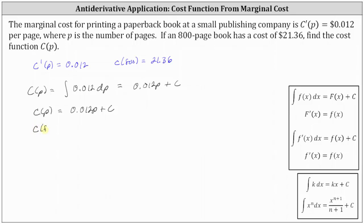If C(800) equals 21.36, and we substitute 800 for P, the cost function value must be 21.36, which gives us the equation 0.012 times 800 plus C equals 21.36.